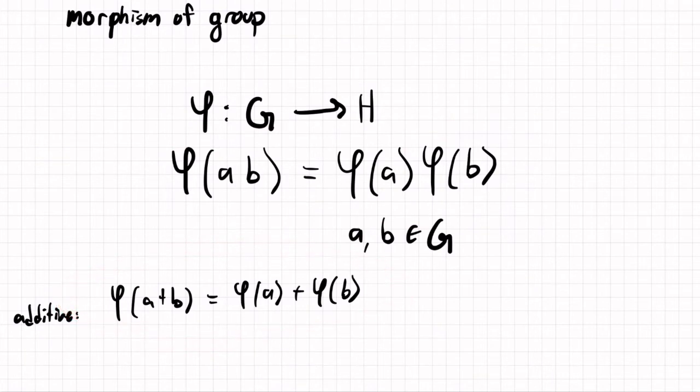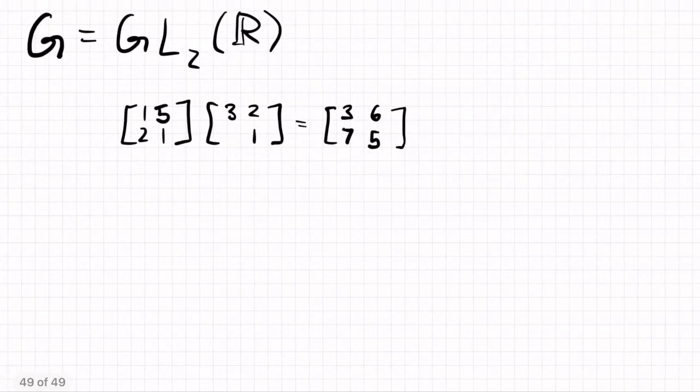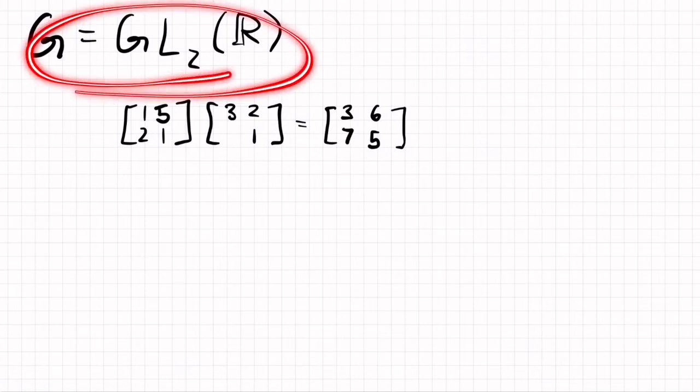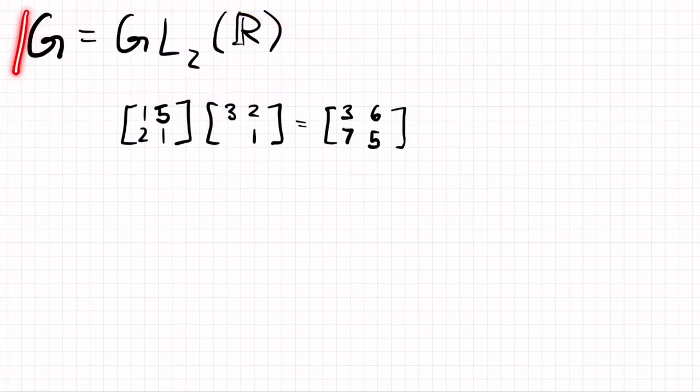So let's look at an example. So let's look at the group GL2R. So let's say G is GL2R.